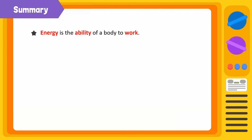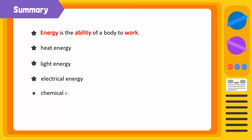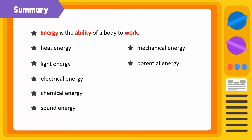Let's summarize. Energy is the ability of a body to work. There are various forms of energy. Some of them are heat energy, light energy, electrical energy, chemical energy, sound energy, mechanical energy, potential energy, kinetic energy, and nuclear energy.